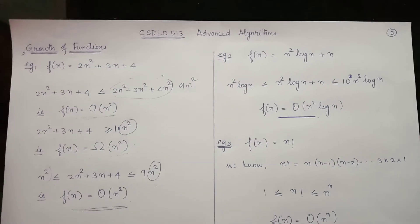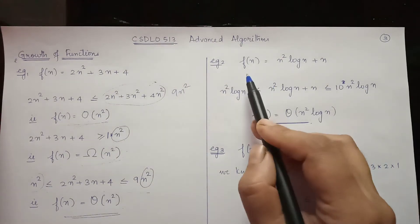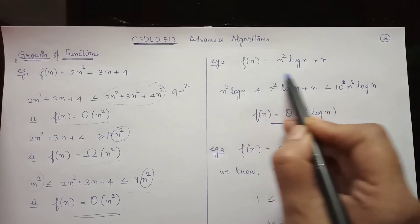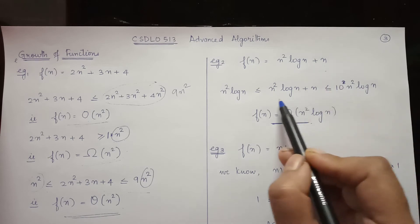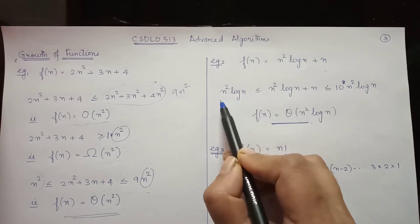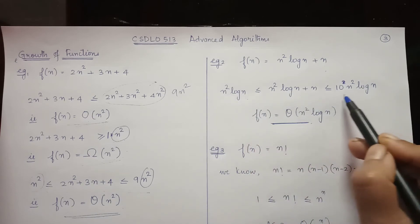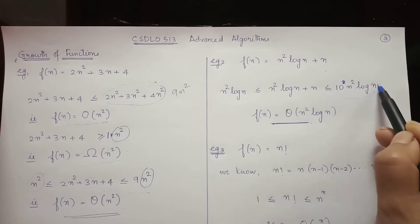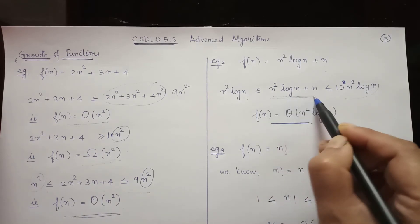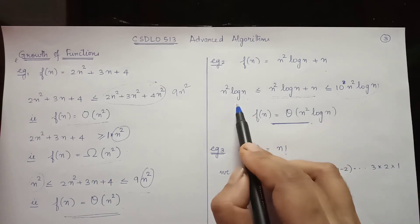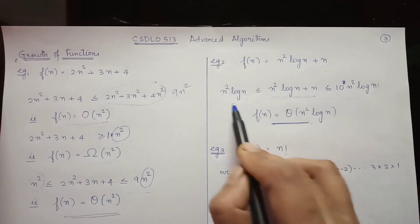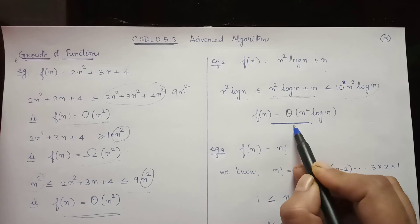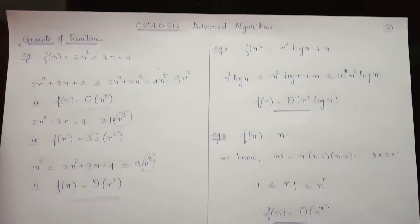Now consider another example where f(n) = n² log n + n. For this f(n), we have considered the lower bound as n² log n, and the upper bound as 10 times n² log n, which is always greater than the given f(n). Since we are able to represent the lower bound as well as the upper bound using the same time function, we can represent f(n) as Theta of n² log n.